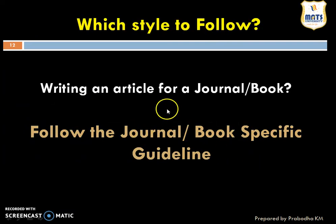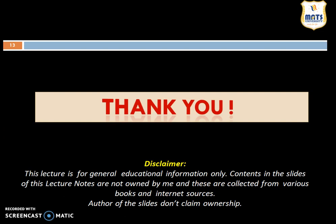Which style should we follow when writing a scientific article for a journal or book? There are many standard formats available — APA, Chicago, Harvard, and others. The simple answer is: we have to follow the journal- or book-specific guidelines. Every journal and book has its own specific guidelines; some follow APA style, some follow MLA style. We must follow those specific guidelines prior to submission or publication. Thank you so much for watching.